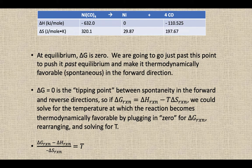We know the delta H's and delta S's of all those chemicals. If at equilibrium delta G is zero, what we're going to do to try and figure out at which temperature does it flip is to go just past equilibrium to make it thermodynamically favorable in the forward direction. Delta G is the tipping point. So we could solve for the temperature at which the reaction becomes thermodynamically favorable by plugging in zero for that delta G, rearranging and solving for T.